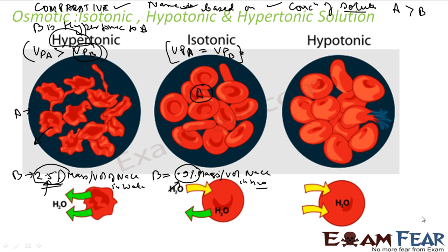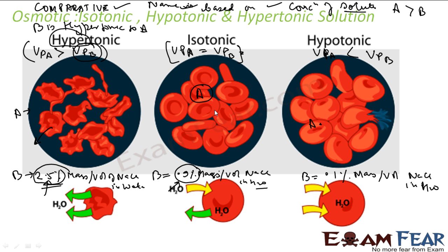The next is hypotonic. For example, instead of 0.9%, let's make it 0.1% mass by volume of NaCl in water as solution B, while solution A is still the red blood cell. Since the concentration is decreasing, the vapor pressure will increase. So the vapor pressure of B will be more than A. If you put the blood cell in such a 0.1% solution, water will flow from this solution into the red blood cell, and it will burst.